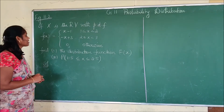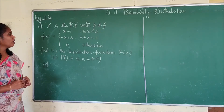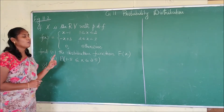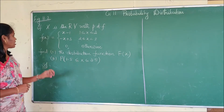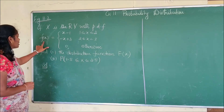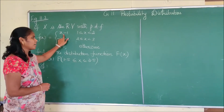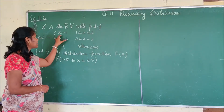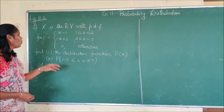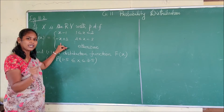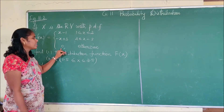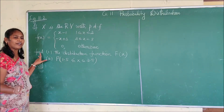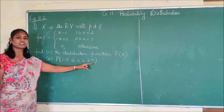Next we are going to see example 11.2. If capital X is a continuous random variable, we have given the probability density function, small f. This is defined as X minus 1 from the interval 1 through 2, and from 2 through 3 it is defined as minus X plus 3, and 0 otherwise. You have to find the distribution function capital F of X.